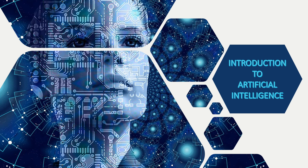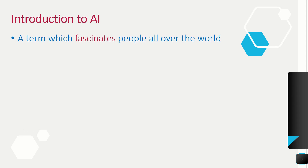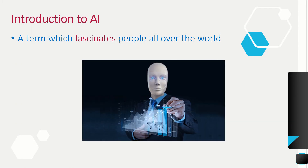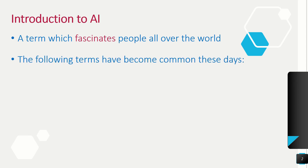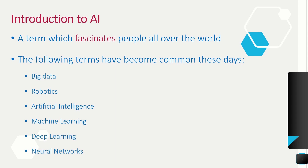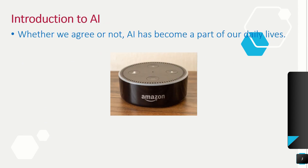Here we are in the first session on introduction to artificial intelligence for class 9. Artificial intelligence is a term that fascinates people all over the world. It was a term that was limited to science fiction initially — we have been mostly witnessing it in movies and TV serials. But with the development of science and technology, everything has changed. Nowadays we frequently get to hear terms like big data, robotics, artificial intelligence, machine learning, deep learning, and neural networks. Most of our smartphones, daily devices, and even the internet use AI.